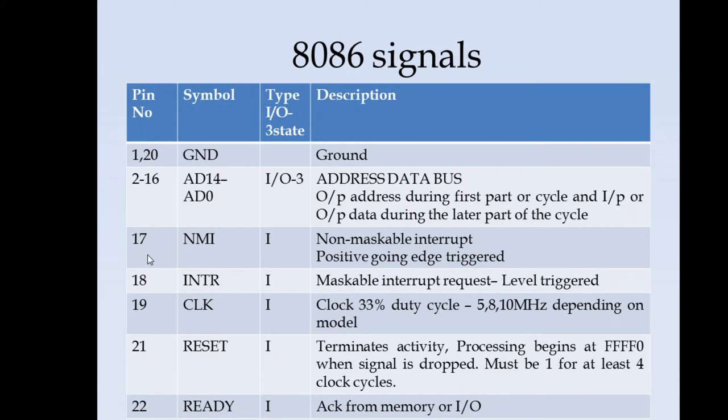Pin number 17 is NMI non-maskable interrupt. Pin number 18 is interrupt, a maskable interrupt, it is a level triggered input. Pin number 19 is the clock signal which acts as an input. Clock is a 33% duty cycle clock. It can have 5 MHz, 8 MHz or 10 MHz depending upon the model of the 8086 microprocessor.